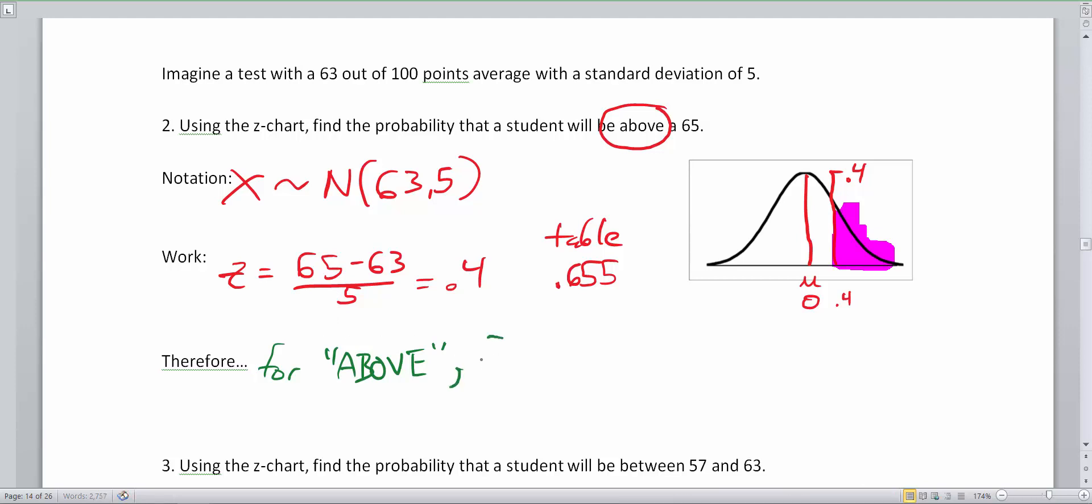So for above, when you see the word above, you're going to find the complement. The table works on below. So this 0.655 is all this area in the white. The complement would be all of the area in purple. The complement is always 1 minus the probability of the event. Our event probability here is 0.655. So to find the complement, we go 1 minus 0.655. If we do that simple subtraction, we get 0.345.